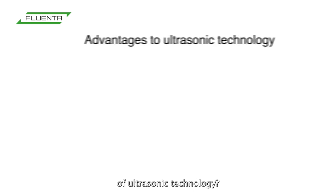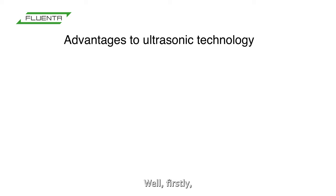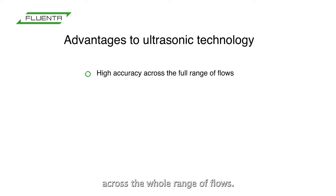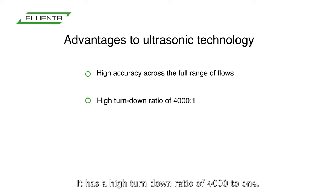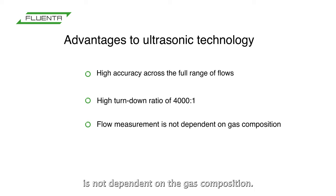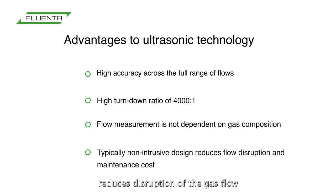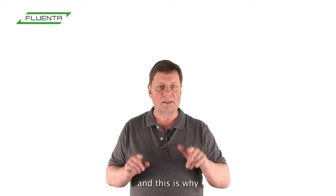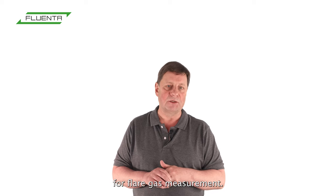What are the main advantages of ultrasonic technology? Well, firstly, it gives a high accuracy across the whole range of flows. It has a high turndown ratio of 4000 to 1. Importantly, the flow measurement is not dependent on the gas composition. And finally, the typically non-intrusive nature reduces the disruption of the gas flow and also reduces maintenance costs. And this is why ultrasonics is the technology of choice for flare gas measurement.